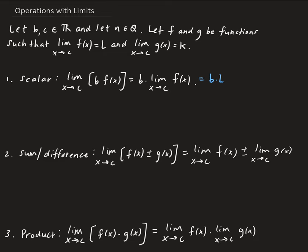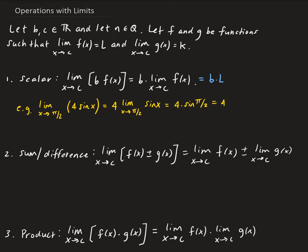Let me do an example. Let's say we have the limit as X approaches pi over 2 of 4 times sine of X. We can take the 4 out using the scalar property, and then we take the limit of sine X as X approaches pi over 2. In this case, we just evaluate sine at pi over 2, so we get 4 times sine of pi over 2. Sine of pi over 2 is 1, so this gives us 4.